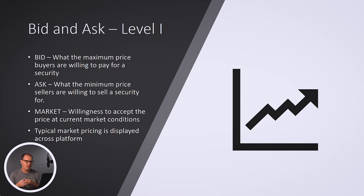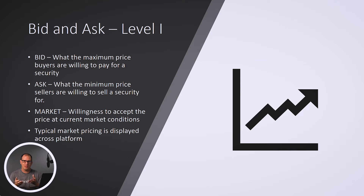As you can see on the screen here, level 1 data is actually a few different things. First of all, we have bid, ask, and market, and then we kind of pull from those three things for level 1 data. Bid is the maximum price a buyer is willing to pay for a security. So if you're out there and you're buying a security, let's say the market price is $200, maybe you don't want to pay $200, maybe you're willing to pay $198. You can go in and put in a bid at $198. That's what bid is.